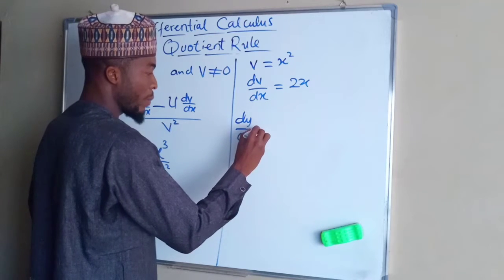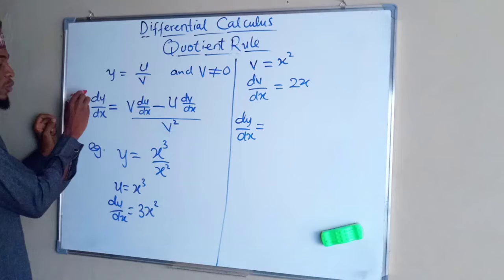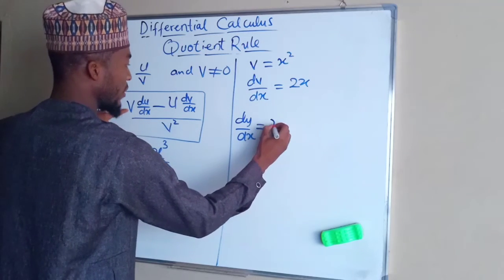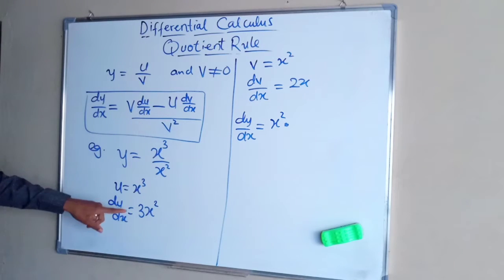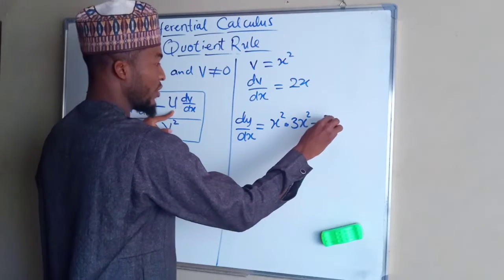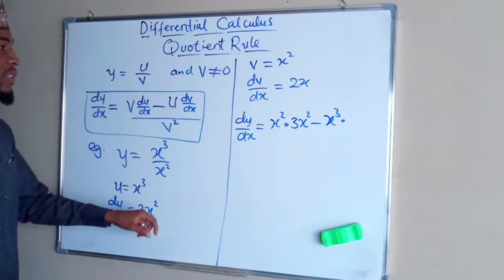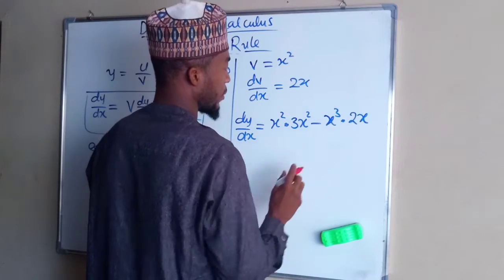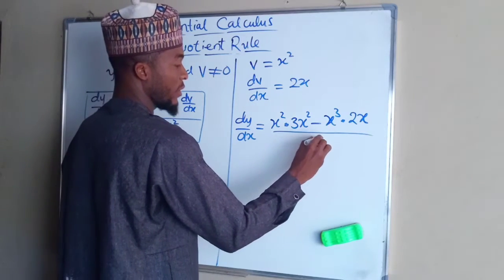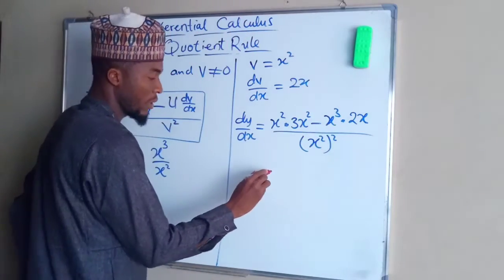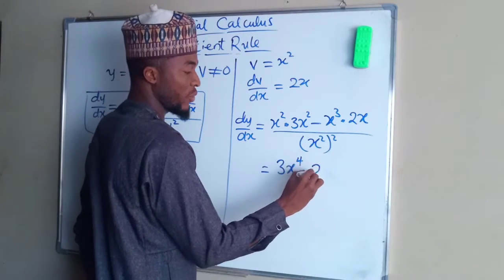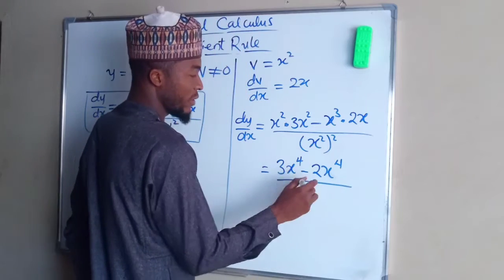dy/dx will be equal to the result from substituting into the formula. dy/dx equals v times du/dx, which is x squared times 3x squared, minus u times dv/dx, which is x cubed times 2x, all divided by v squared, which is x squared all squared. Simplifying: 3x to the fourth minus 2x to the fourth, divided by x to the fourth.